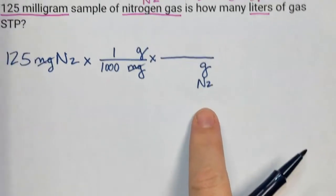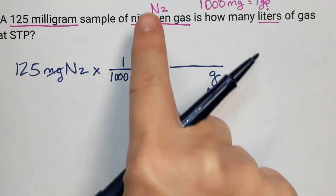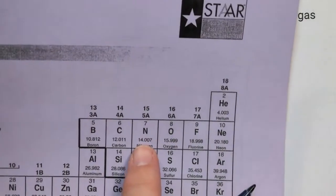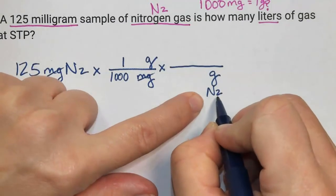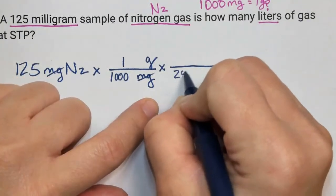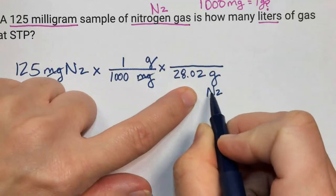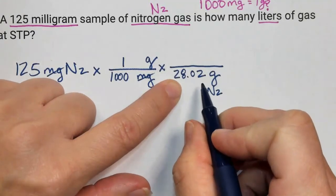Remember, we're looking for nitrogen, right? Because that's the formula we're looking for, nitrogen gas. So nitrogen is 14.01. So it's 14.01 times 2, which is 28.02, the molar mass for nitrogen from the periodic table.